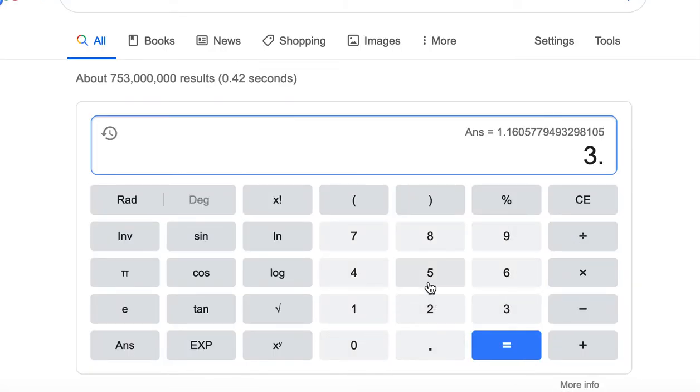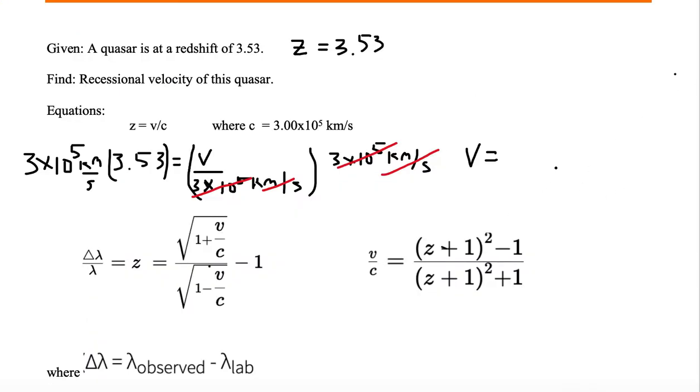So let's go to our calculator, 3.53, and multiply it by 3 ee5, and we get 990,000 kilometers per second.